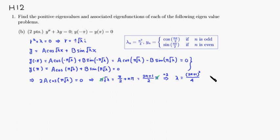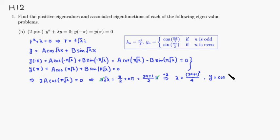The corresponding eigenfunction is Y equals cosine of square root of lambda times X. Since square root of lambda equals (2N plus 1) over 2, the eigenfunction is cosine of (2N plus 1) over 2 times X.